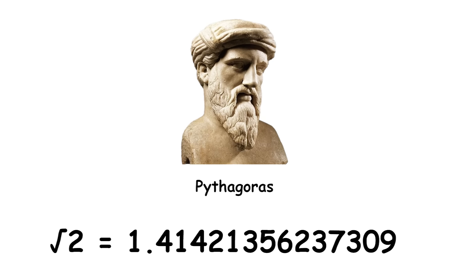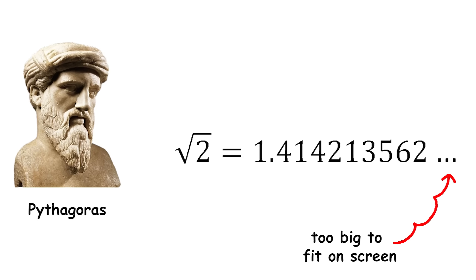The square root of 2 is an irrational number, meaning its decimal representation never ends or repeats. Despite its seemingly simple definition, square root of 2 has profound implications in various fields, including geometry, trigonometry, and physics.